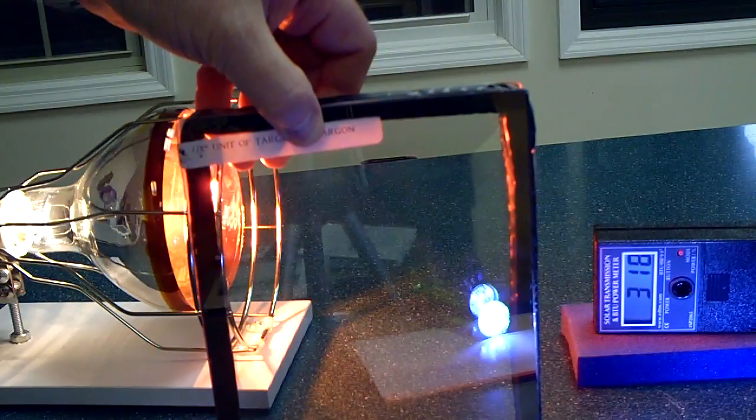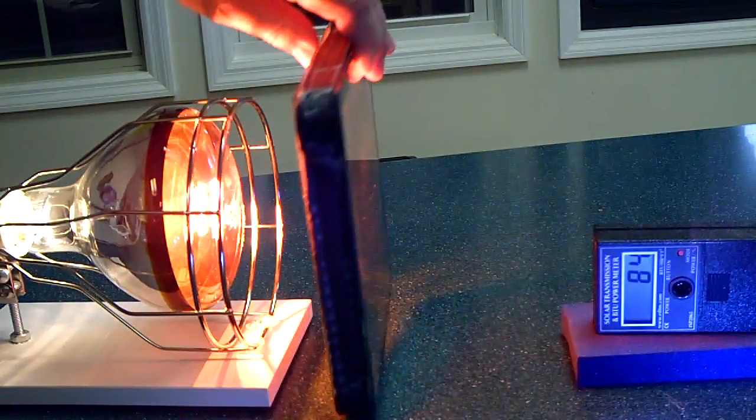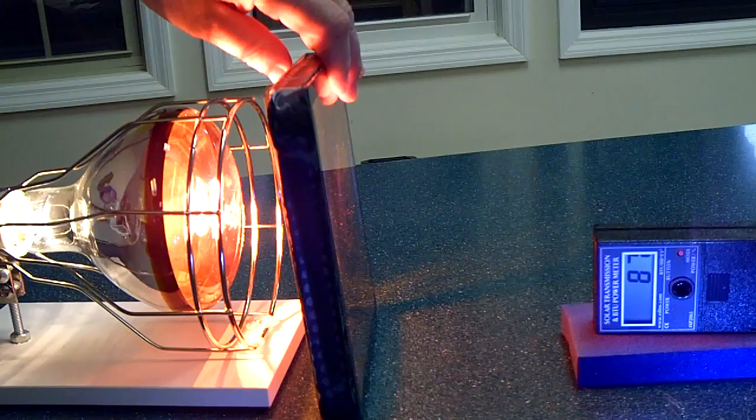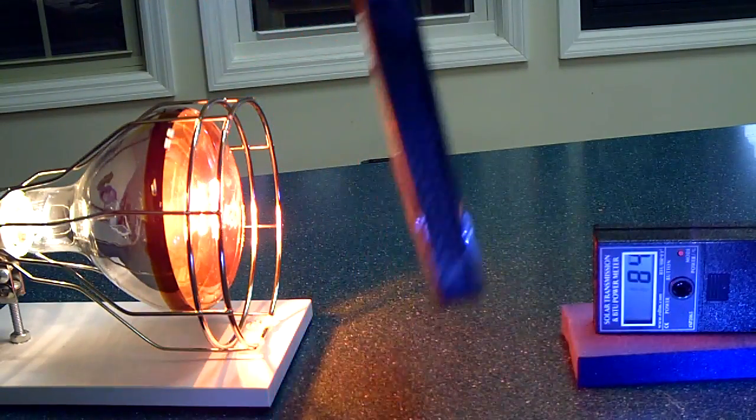Let's try dual pane with standard low E. Wow, from 300, now we are less than 100. That's 80% of the heat not passing through.